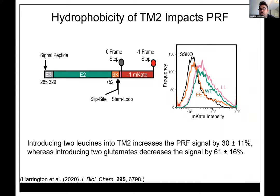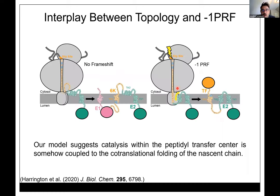In flow cytometry, we see the statistical distribution of single-cell fluorescence measurements. Mutating the slippery sequence knocks out frameshifting (baseline). Wild type shows frameshifting above baseline. Adding two leucines gives a ~30% increase in frameshifting; adding two glutamates gives a ~60% reduction. These mutations are made a couple hundred bases upstream of the frameshift site, but you do see the feedback we would expect for this type of connectivity.